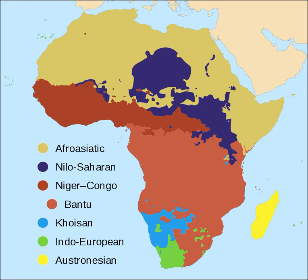Afroasiatic languages are spoken throughout North Africa, the Horn of Africa, Western Asia and parts of the Sahel. There are approximately 375 Afroasiatic languages spoken by over 400 million people. The main subfamilies of Afroasiatic are Berber, Chadic, Cushitic, Egyptian and Semitic.